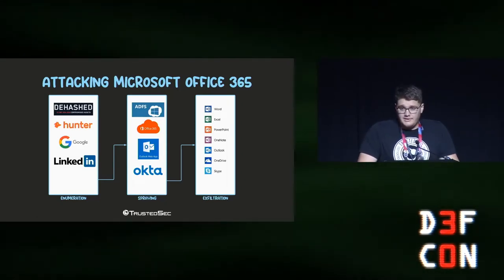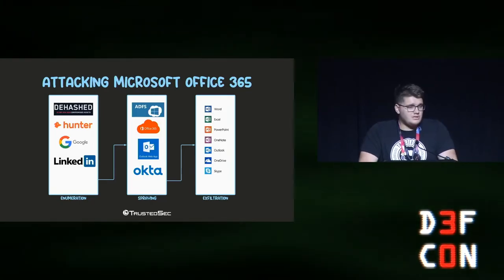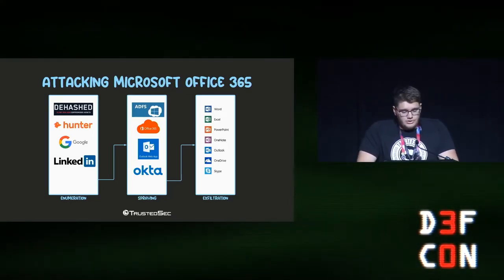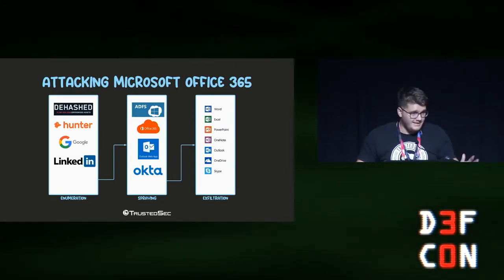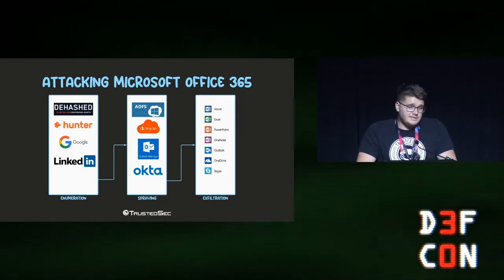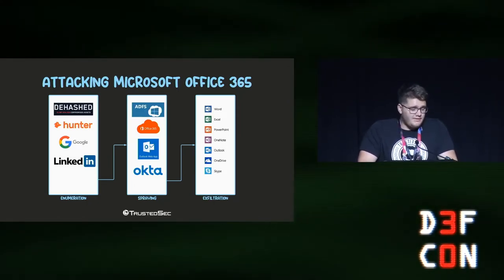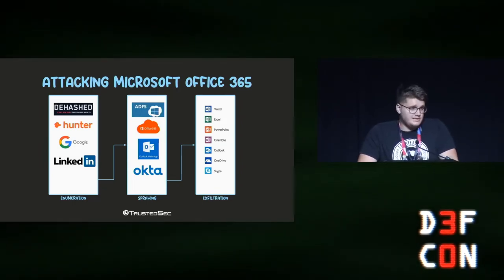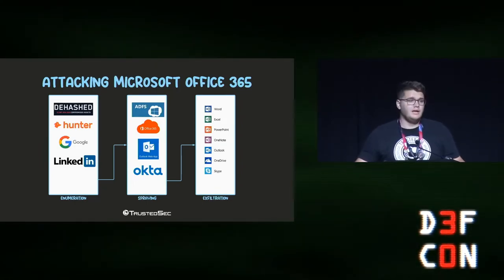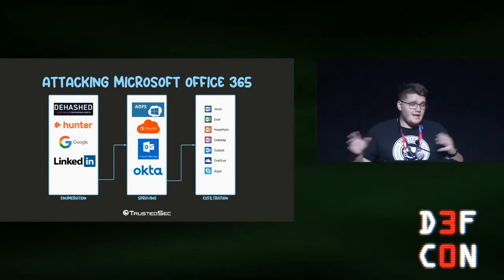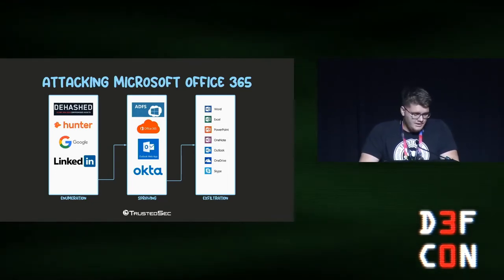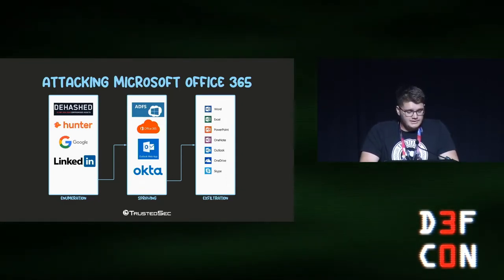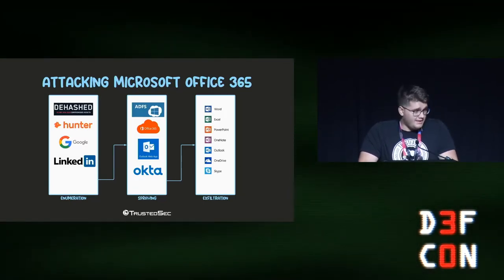Then you go to the spraying phase where you pick a weak password like 'Summer2022!' which everybody still uses, and you pick a service to hit. Typical targets are Microsoft Office 365 cloud tenant, customers that still expose ADFS, Outlook Web Application and Exchange externally, and third-party IAM and SSO providers like Okta. You spray, hopefully hit a user with a bad password, get access to a service with data, and perform post-exploitation — typically exfiltration.